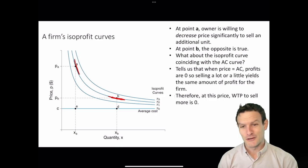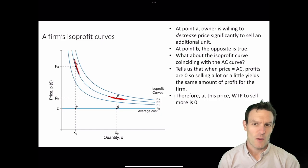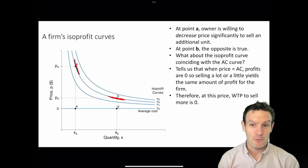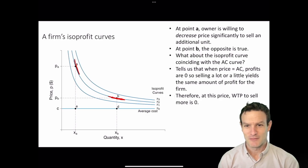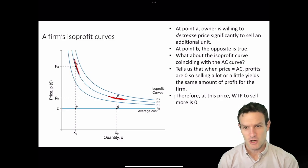On the isoprofit curve that coincides with the average cost curve, when price equals average cost, profits are zero. Selling a little or a lot yields the same amount of profit, so at that price the willingness to pay to sell more is simply zero. The firm is indifferent between points E and D along its average cost curve, but its willingness to pay to sell more goods is zero — it's not willing to reduce price at all to sell more units.